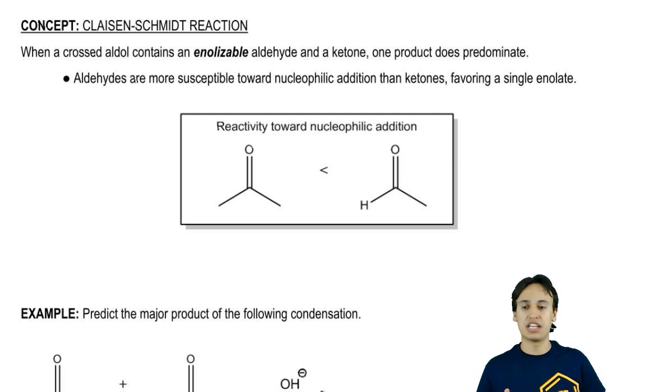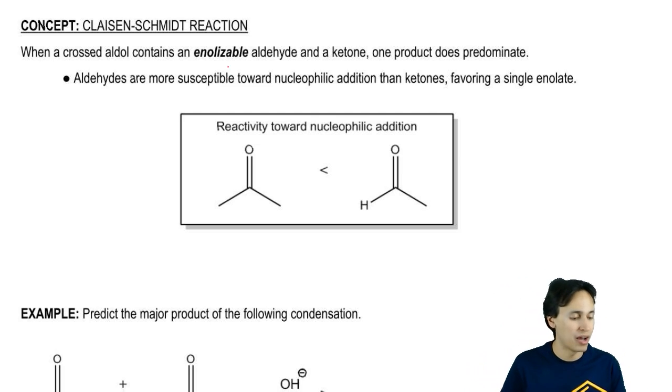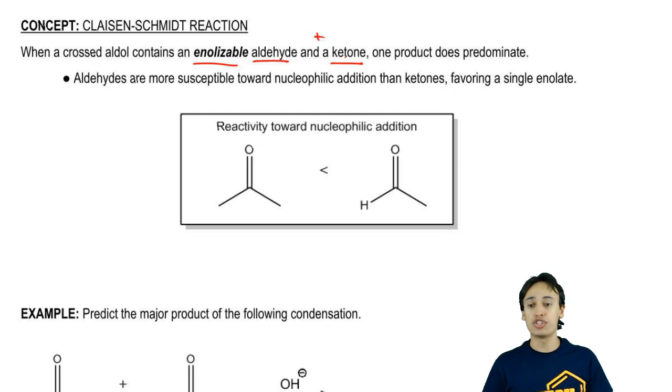The Claisen-Schmidt condensation is what happens when you have an enolizable aldehyde plus ketone. This means that we're kind of breaking the rules.